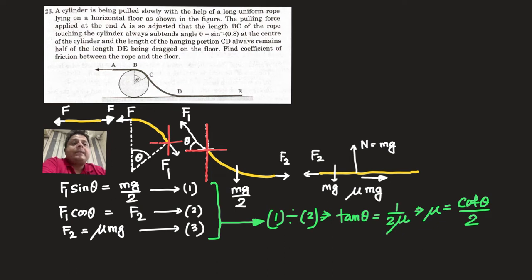First I have considered, let mass of the part DE be m and mass of the part CD be half m. Obviously it is half the length means half the mass. Then I think you should consider only these two parts of the diagram, that will be enough.